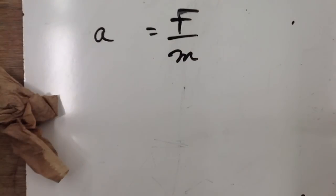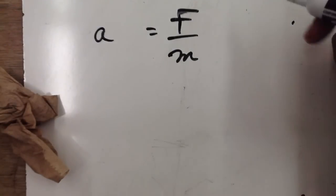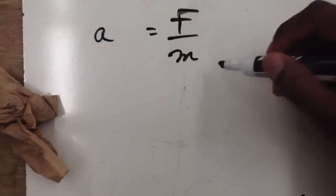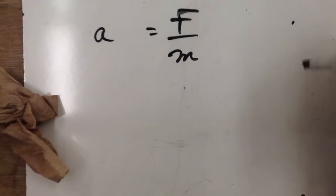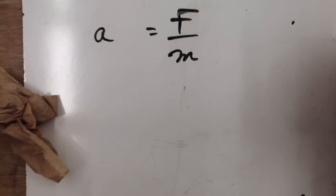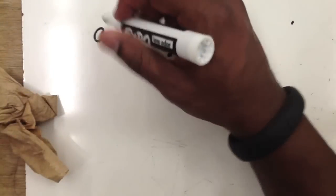In our last video we studied Newton's second law of motion, which states that the acceleration of an object is equal to the net force acting on it divided by the mass. In this video, I'm going to show you some examples using this formula.